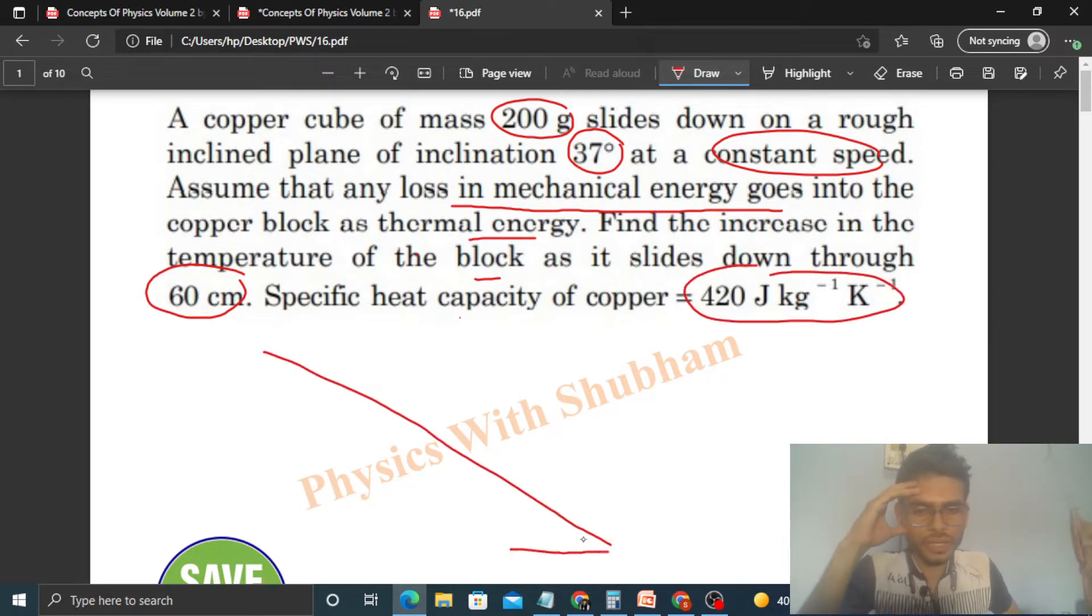Okay, so we have a rough inclined surface, angle of inclination is given as 37 degrees, and we have a copper block which moves at constant speed.